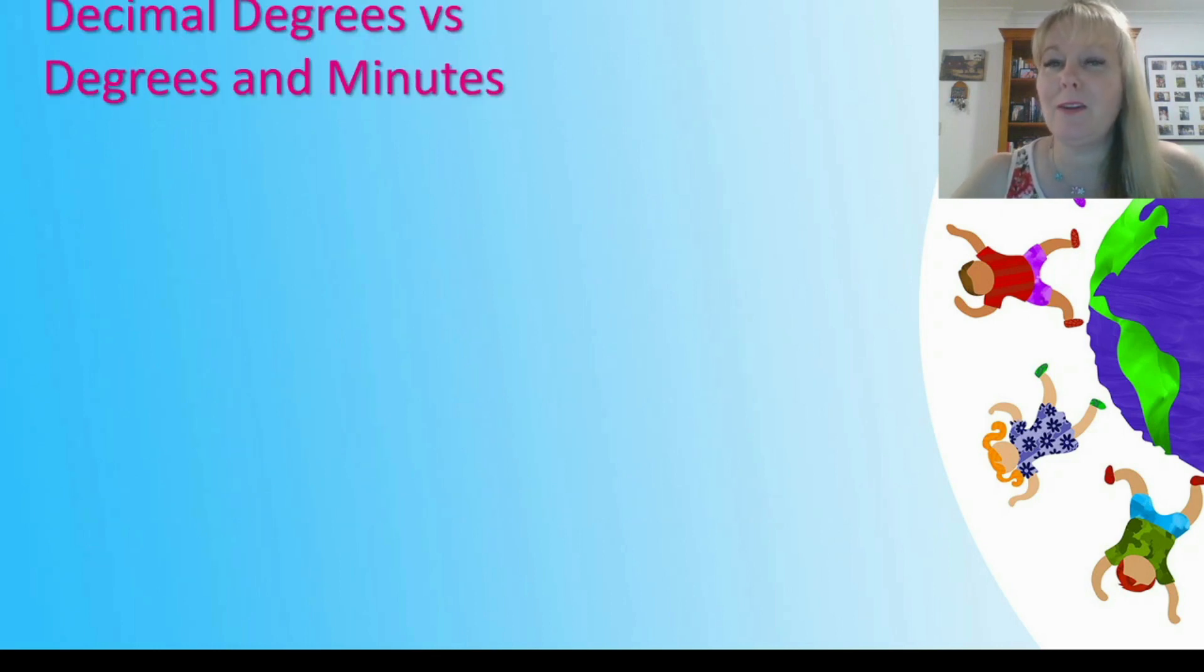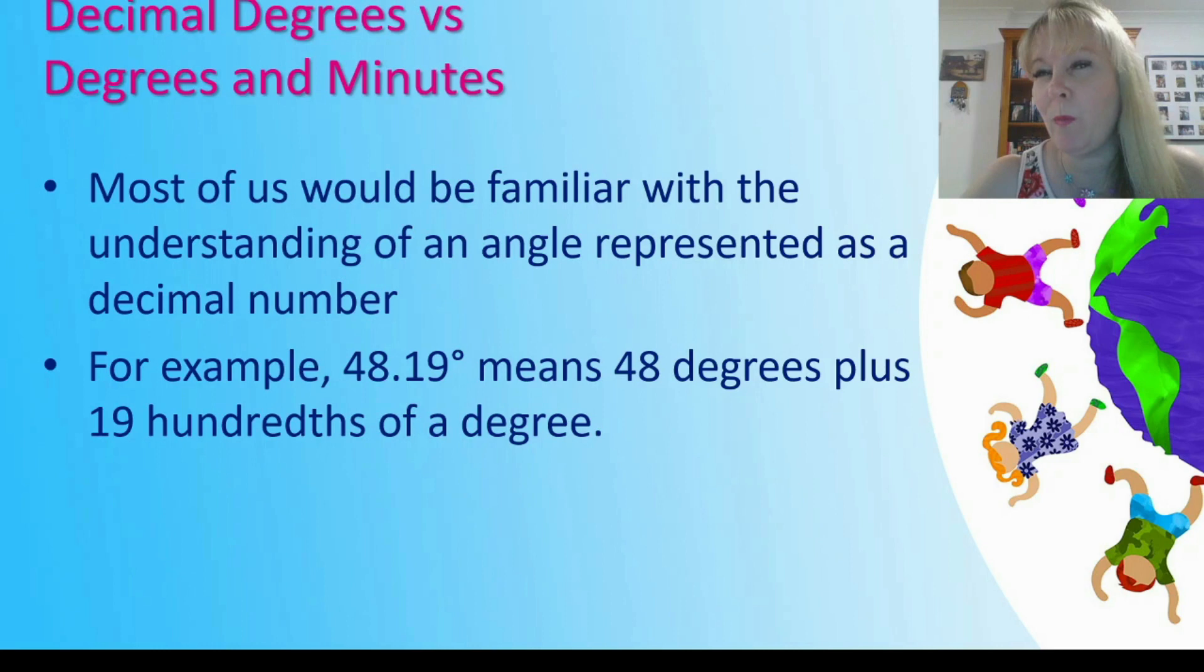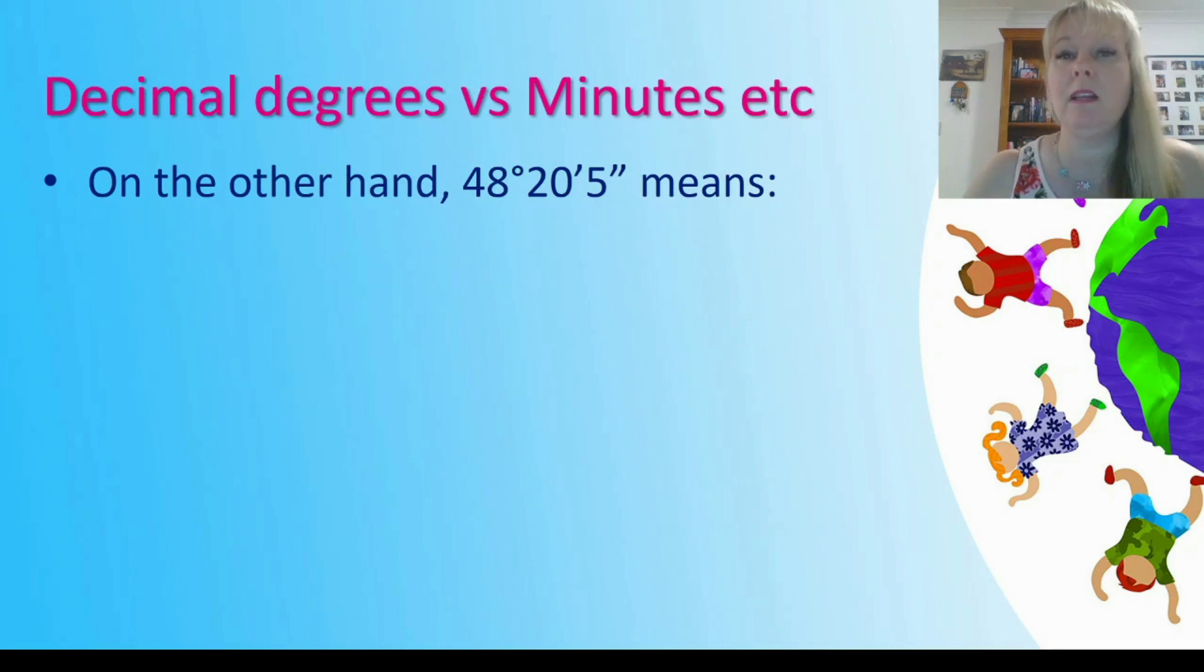So enough of the history lesson, let's get on to some maths. Let's talk about how to convert from decimal degrees into degrees and minutes and vice versa. An angle is usually based on a decimal number. 48.19 degrees means 48 degrees plus 0.19 of a degree. You need to understand that these numbers are additive in nature. We add 48 plus 0.19 to get 48.19 degrees, and we do the same with minutes and seconds.